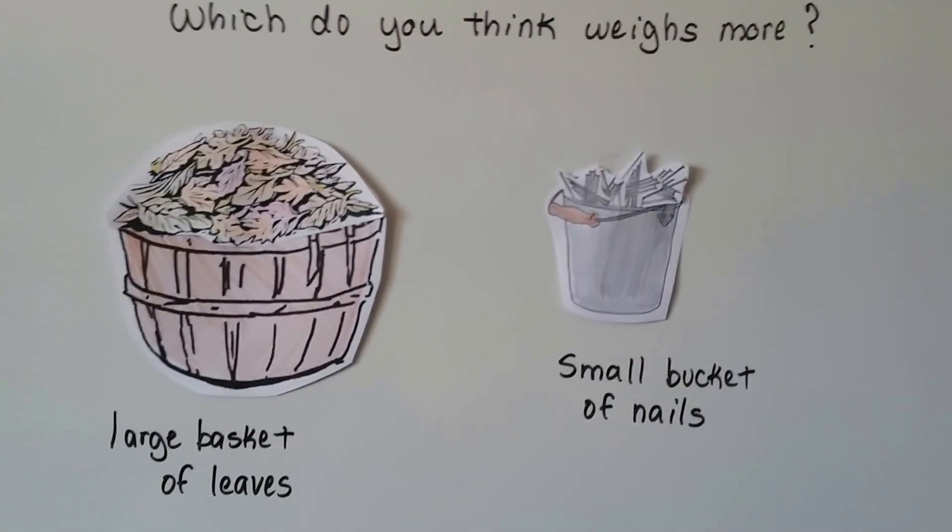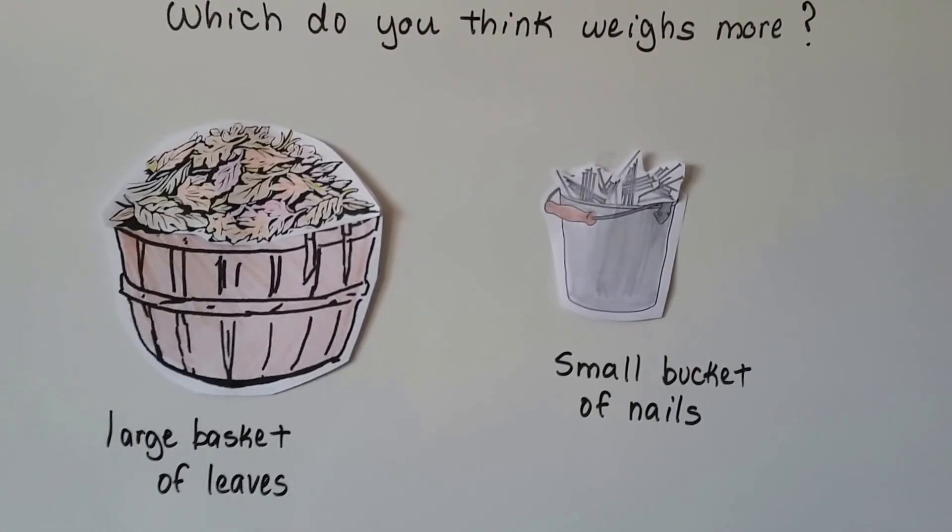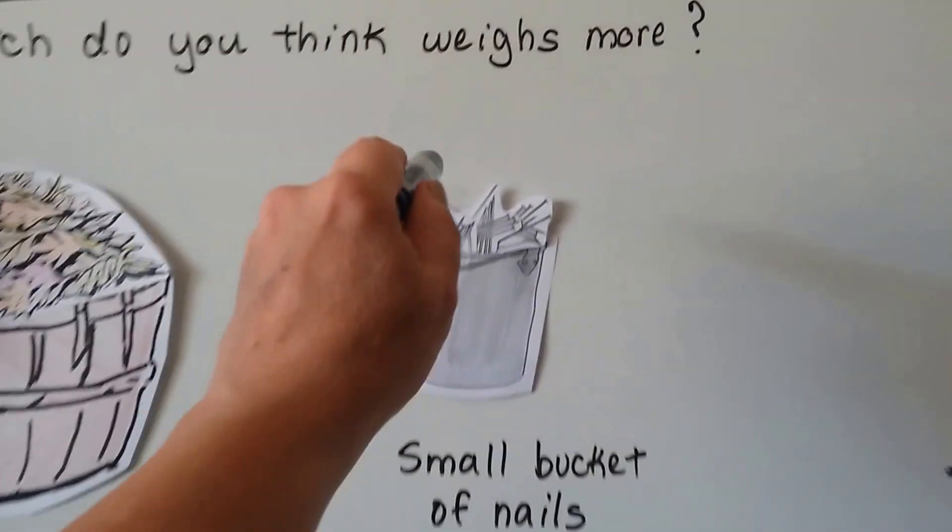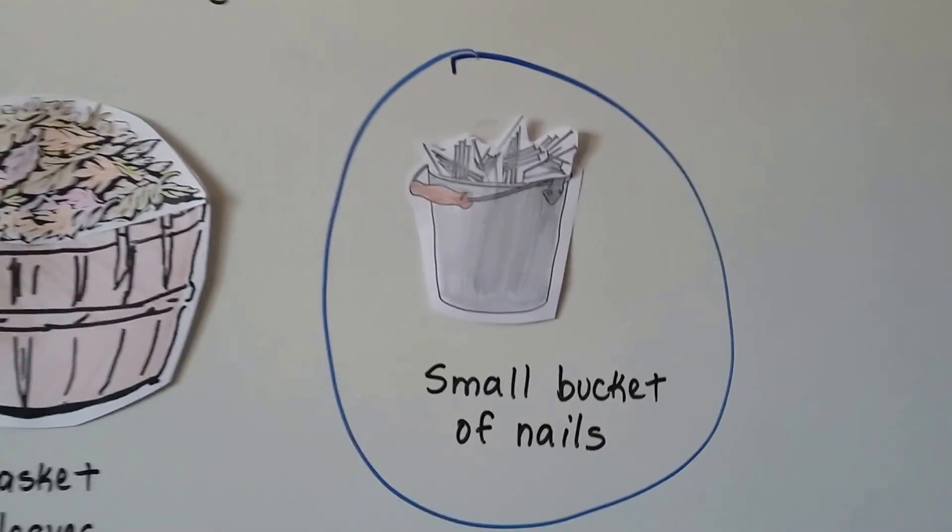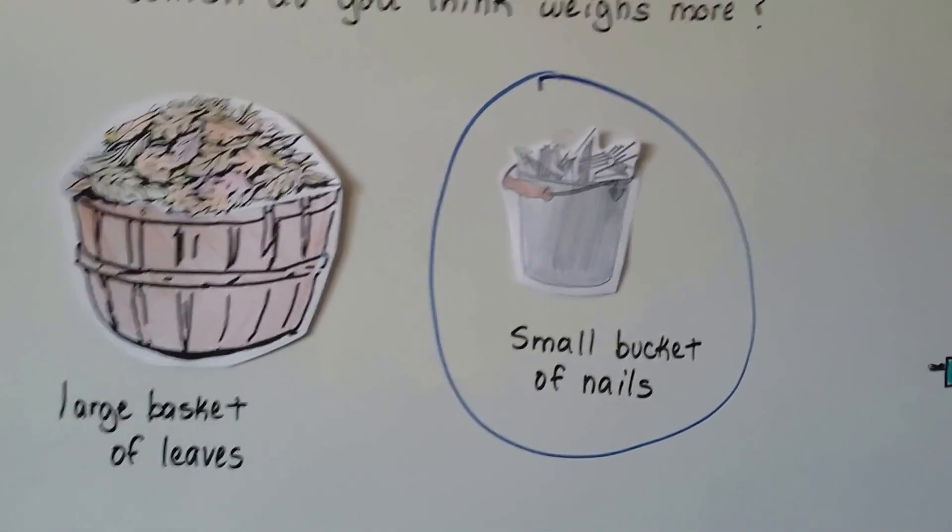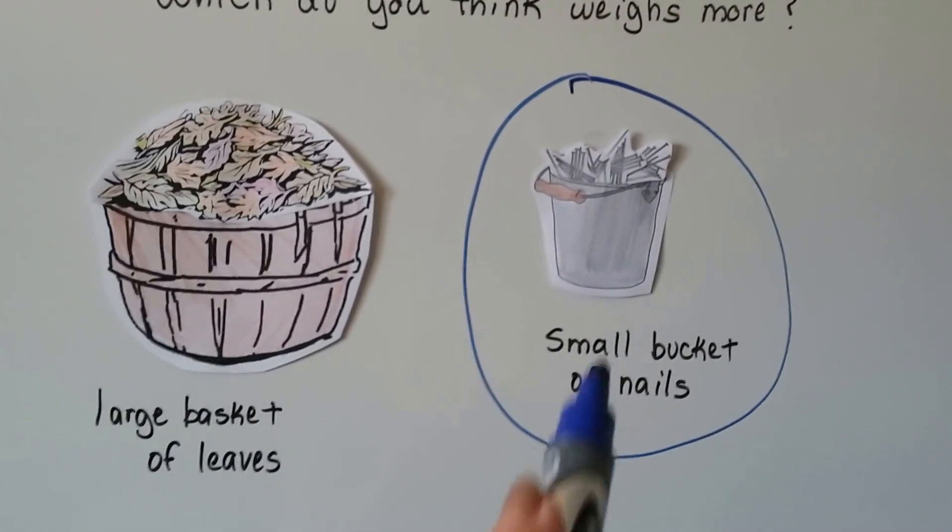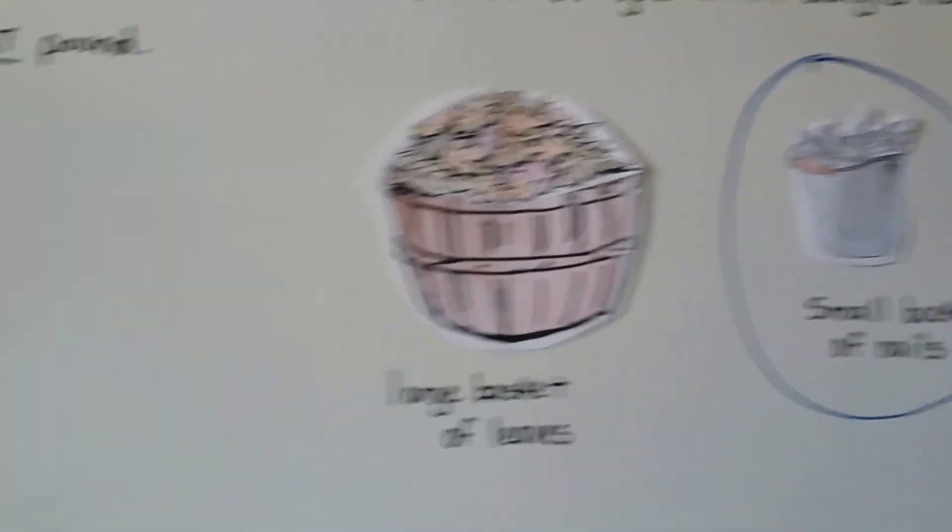So there's more mass in a bucket of nails. They're made out of steel. They're made out of metal. So if you think that the bucket of nails weighs more, you're right. They're made out of metal and they're a lot heavier. There's a lot of air in that basket of leaves. So there's more mass in the bucket of nails. It's heavier.